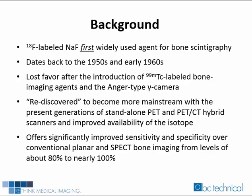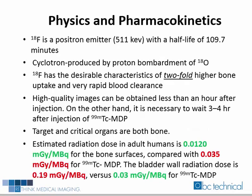The major benefit of F-18 Bone Scans is significantly improved sensitivity and specificity over conventional planar and SPECT bone imaging. The sensitivity and specificity with F-18 Bone Scans improves from about 80% with conventional imaging to nearly 100% with PET imaging. F-18 is a positron emitter with 511 keV gamma rays and a half-life of about 110 minutes. It is cyclotron produced by proton bombardment of oxygen-18. F-18 has the desirable characteristics of two-fold higher bone uptake and very rapid blood clearance. High-quality images can be obtained less than an hour after injection, whereas it is necessary to wait three to four hours after injection of technetium-99M MDP.